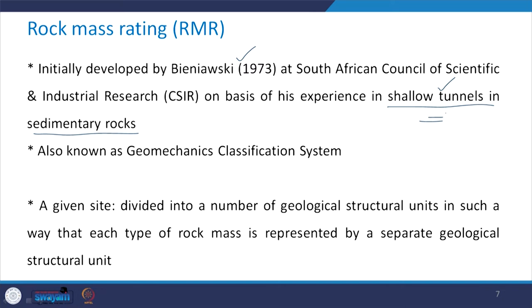This is also known as the Geomechanics Classification System. What is done is: at any given site, we need to divide the whole site into a number of geological structural units such that each type of rock mass is represented by a separate geological structural unit. For example, if you want to construct a tunnel over a stretch of a few kilometers, you have to traverse that whole stretch to identify different geological structural units.